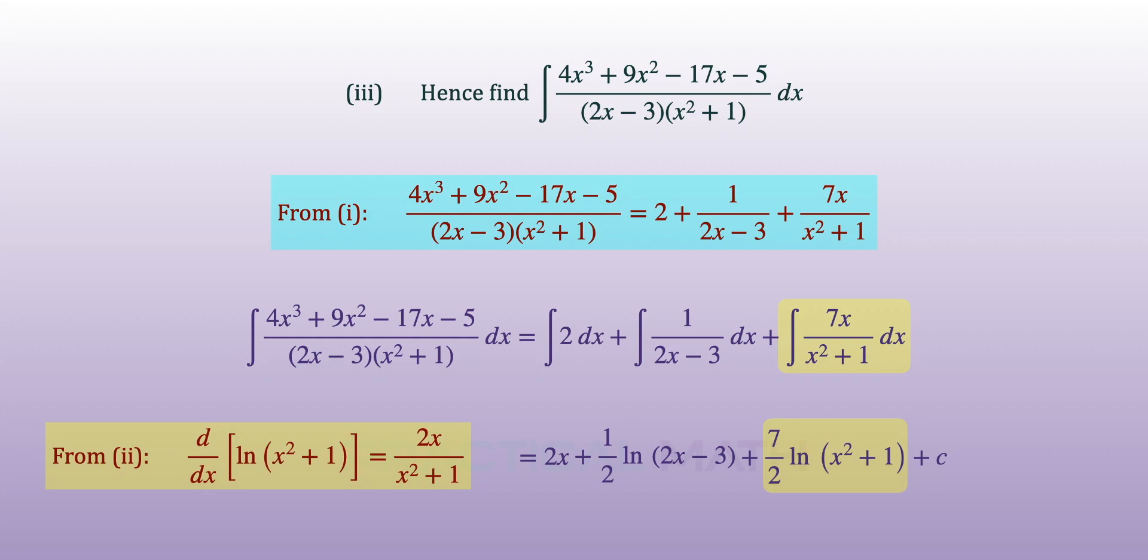So, by multiplying 7 over 2 to this, we will be able to integrate the last term giving us 7 over 2 ln of x squared plus 1 close bracket plus c, where c is the arbitrary constant from the integration.